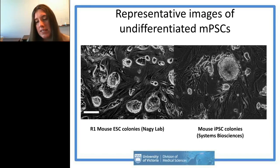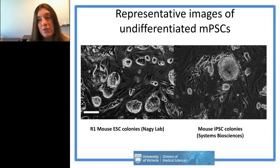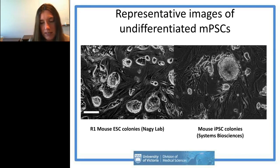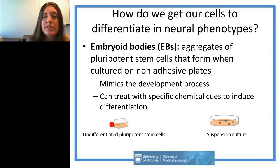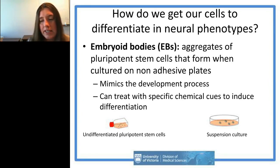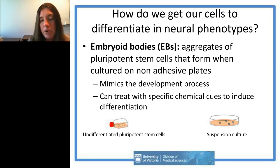We purchased our mouse iPSC line from System Biosciences, and you can see they form nice colonies. One theme throughout my talk is that anytime you're growing these stem cells, they really like to grow as aggregates, both when undifferentiated and during differentiation. To get mouse pluripotent stem cells to go into neural phenotypes, it's quite common to grow them as aggregates in suspension, although people are also moving toward protocols that avoid embryoid body formation.